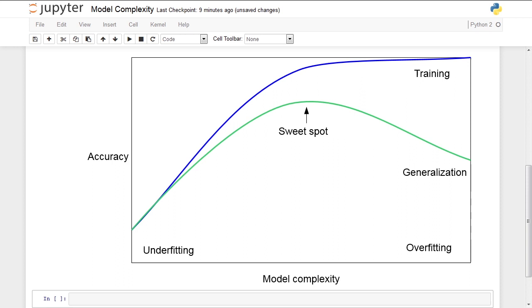In the middle is a sweet spot, which will give us the best tradeoff between overfitting and underfitting, and lead to the best generalization performance. This is the spot that we want to find by adjusting our hyperparameters.